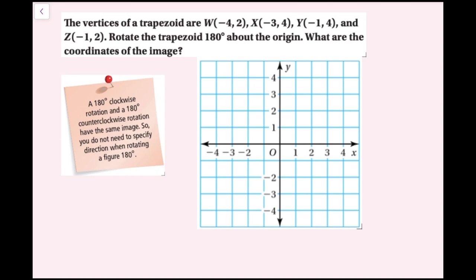First I'm going to draw the original trapezoid by plotting and labeling these points in black: W at (−4, 2), X at (−3, 4), Y at (−1, 4), and Z at (−1, 2). Then I'll draw the trapezoid.